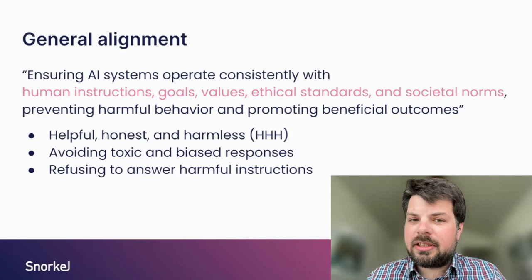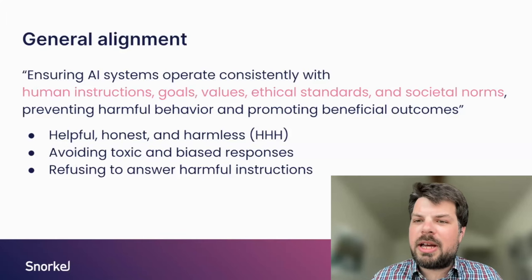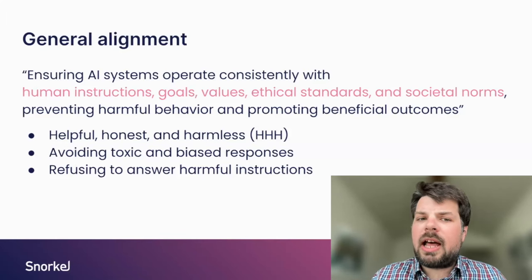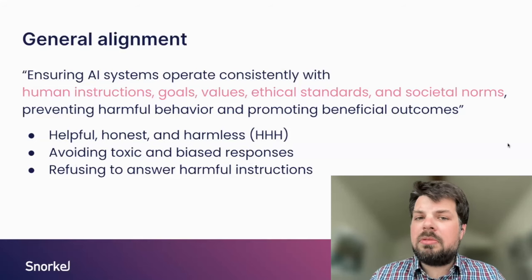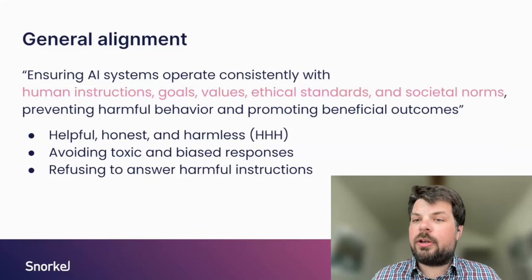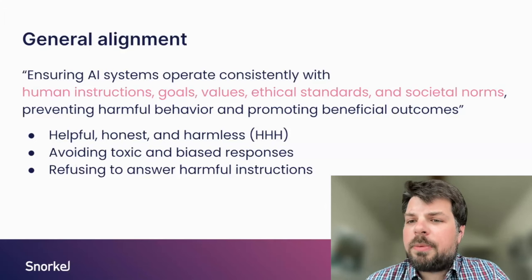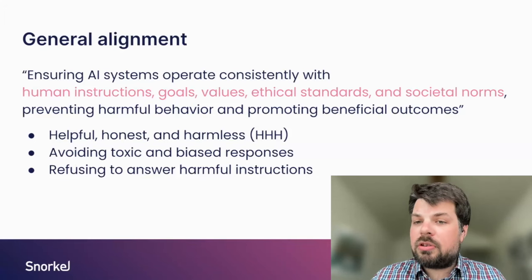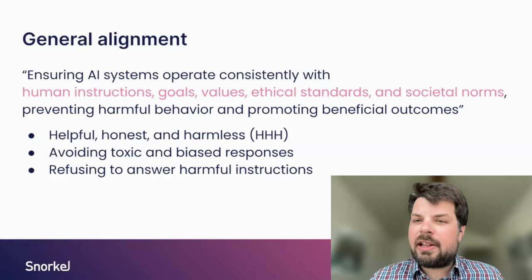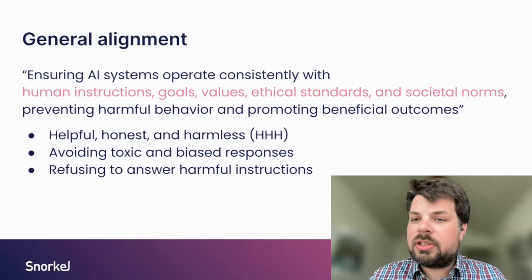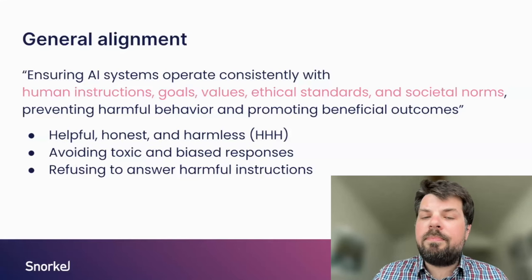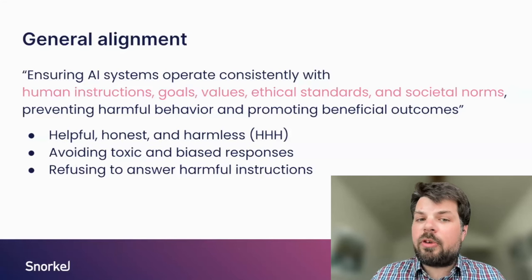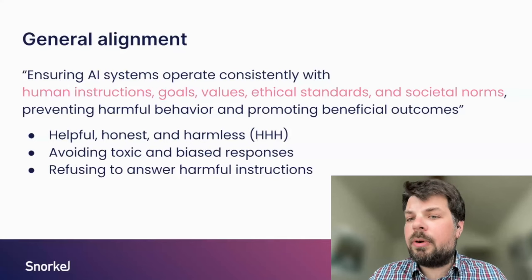Before we talk about enterprise alignment, here's a very short introduction to alignment more broadly. The idea of alignment is to make sure that our AI systems — very generally, systems that might involve a large language model component, but not only — operate consistent with the kind of things that we'd like to have as humans. That means we'd like them to take our instructions, have the same goals as us, and behave according to our values. It means we'd like to satisfy ethical considerations, and our societal norms should be encoded in these systems. It also means we'd like to prevent them from exhibiting harmful behavior and to promote beneficial types of behaviors.